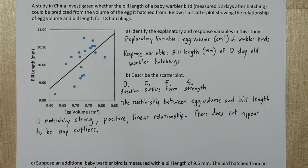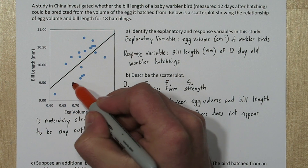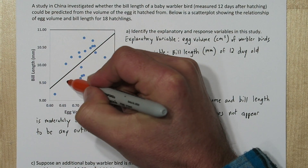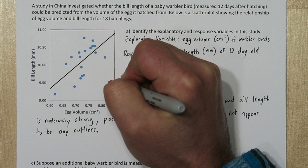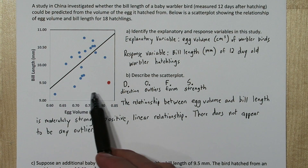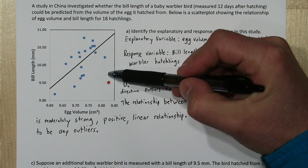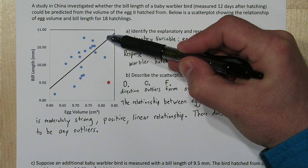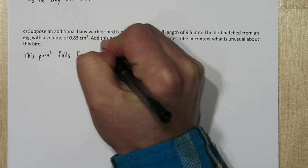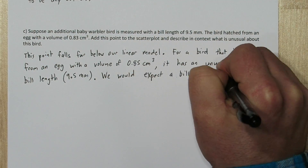So we've described the scatterplot. Now if this additional bird has a bill length of 9.5 millimeters — that's right here — and it has an egg volume of 0.83, that's probably a point about right here. Notice this point is pretty far from our model line. Typically we'd expect a bird with an egg volume of 0.83 to have a bill length much closer to about 10.75 millimeters. So this particular bird has an unusually short bill length relative to its egg volume.